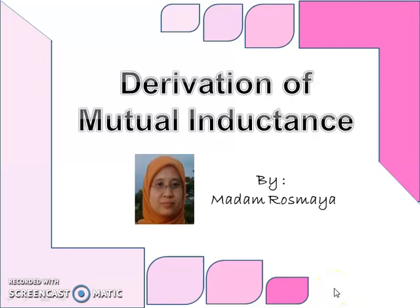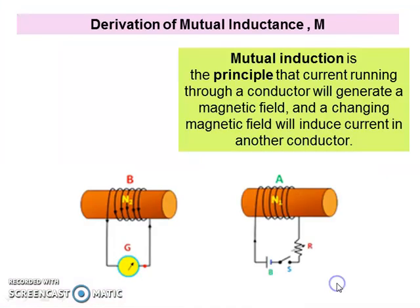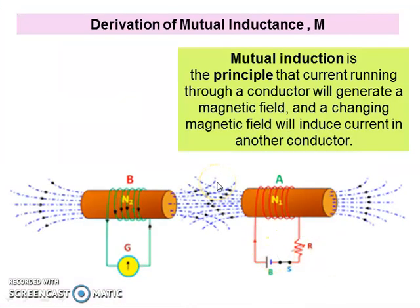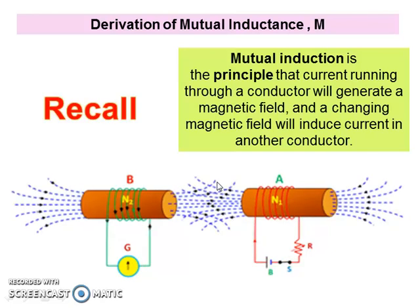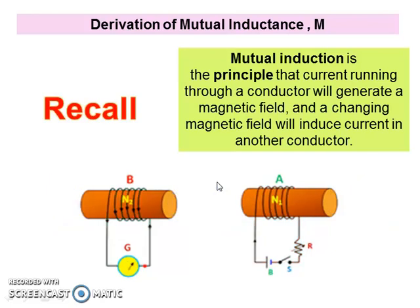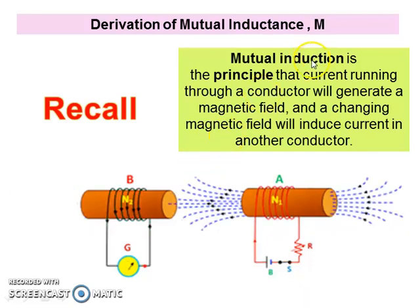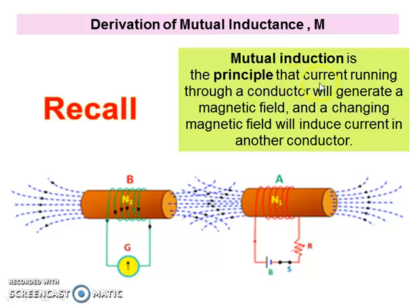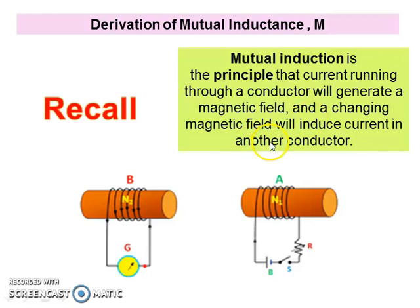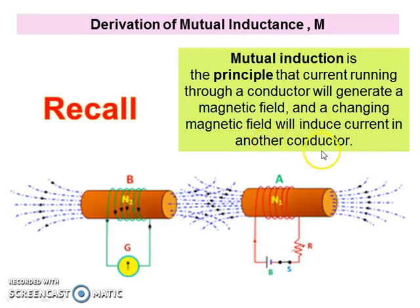Derivation of Mutual Inductance. Before we discuss the derivation of Mutual Inductance M, we recall Mutual Induction. Mutual Induction is the principle that current running through a conductor will generate a magnetic field, and a changing magnetic field will induce current in another conductor.